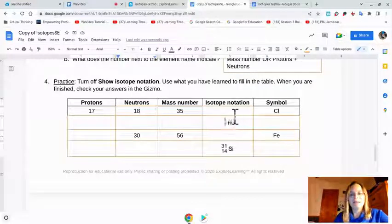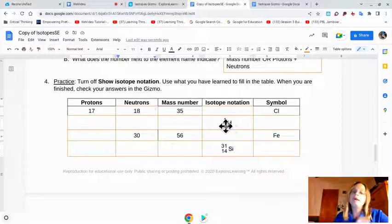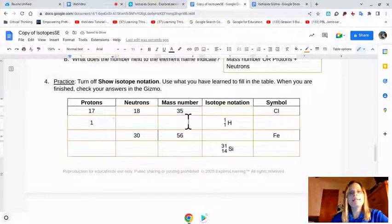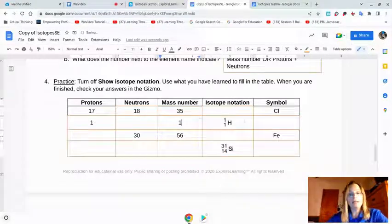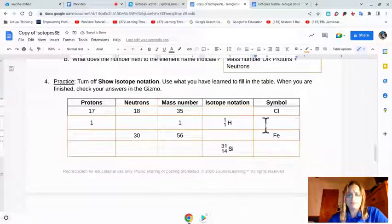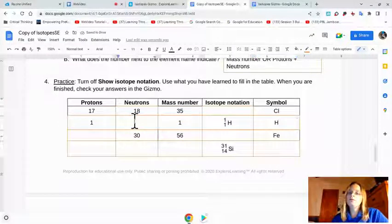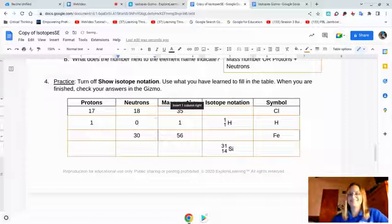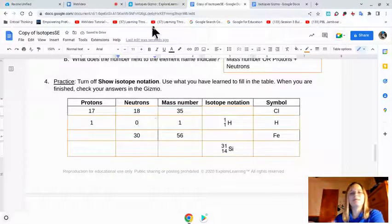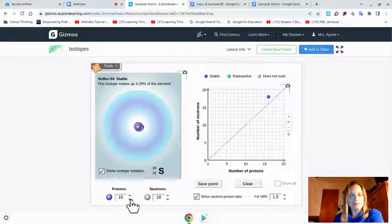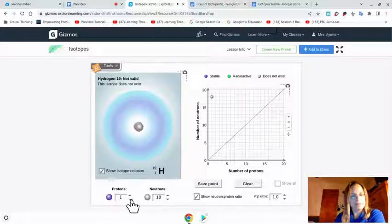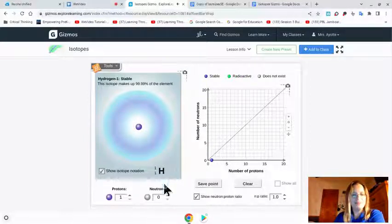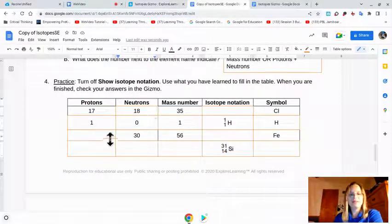So here we have isotope notation of 1 and 1. Remember that bottom number tells us the protons. We already know that there's one proton. The top number is the mass number. So we know the mass number is 1. And the symbol was given to us right there. So that's pretty easy. We're going to put the H there. Perfect. Now the number of neutrons. Remember we do mass number minus protons. 1 minus 1 equals 0. Didn't need a calculator or my fingers that time. We're going to double check, make sure. We'll set this to 1 and this to 0. There's probably an easier way to do this. And look. The 1 and the 1 is the same. Yay us. So we got it right.